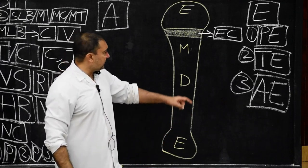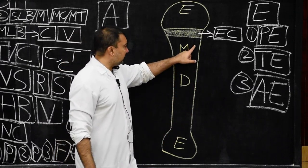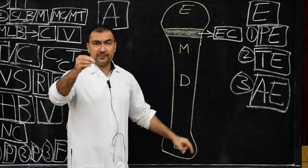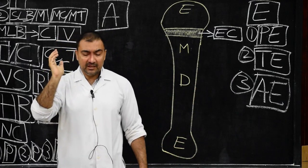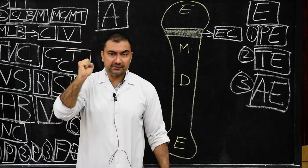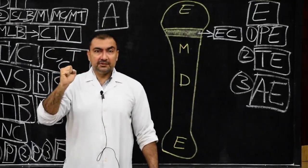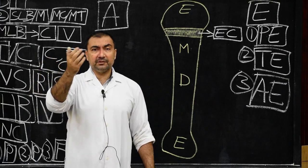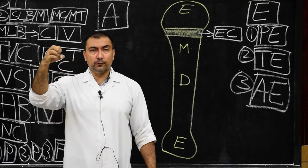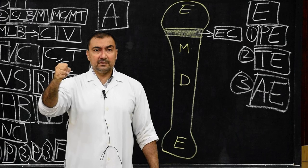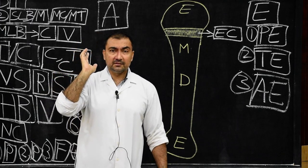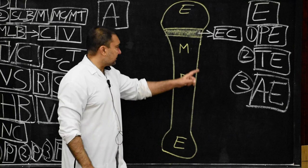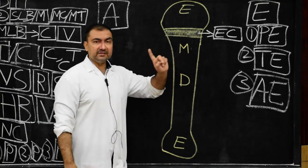Another important point about the metaphysis is that externally it is the region where various ligaments, muscles, or even joint capsules are attached. Any traction to these muscles, ligaments, or capsules — any shearing force — may cause a breakage or damage to the metaphysis.